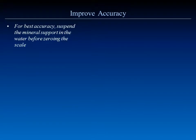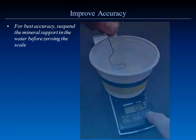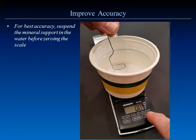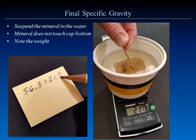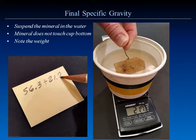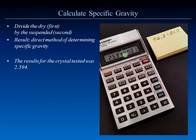There is one subtlety: for maximum accuracy, suspend the support for the mineral in the cup of water submerged, then zero it out. With very small samples and very light weights, the volume of water displaced by the support may throw off the number. We now have two numbers on our Post-it. Divide the first number by the second and we get a value of 2.594. That's it — we're done.